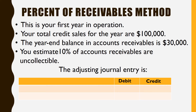That takes us to the percent of receivables method. This is just another way to look at it. Instead of saying that about 2% of all my sales won't be paid, I actually go through and either look at my accounts receivable and see which accounts I think will go bad, or I can just estimate based on my accounts receivable.